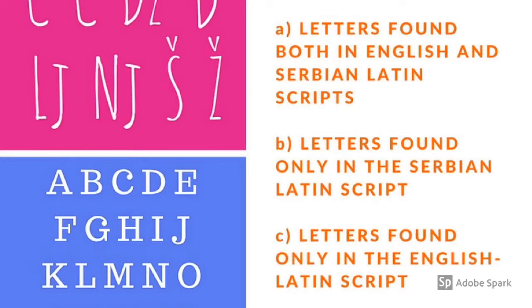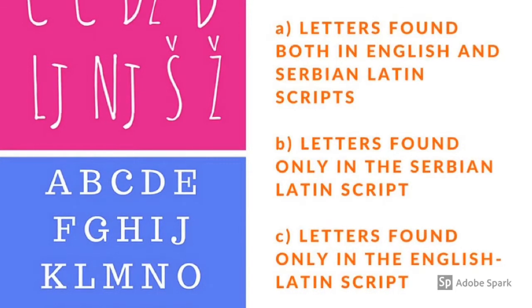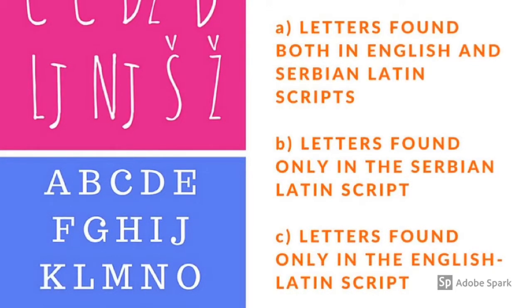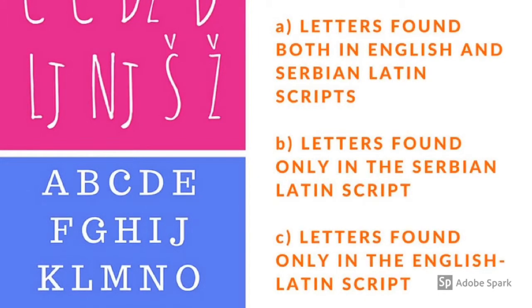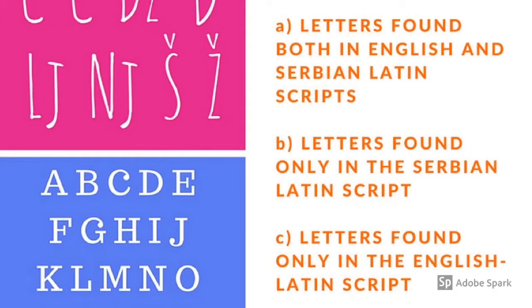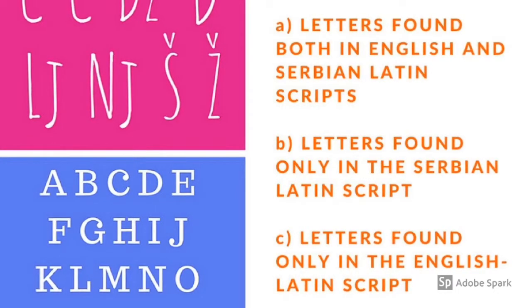Now let's do our first exercise. Letter A is found both in English and Serbian Latin scripts — that's the third box. Letter B is found only in the Serbian Latin script — that's the first box.